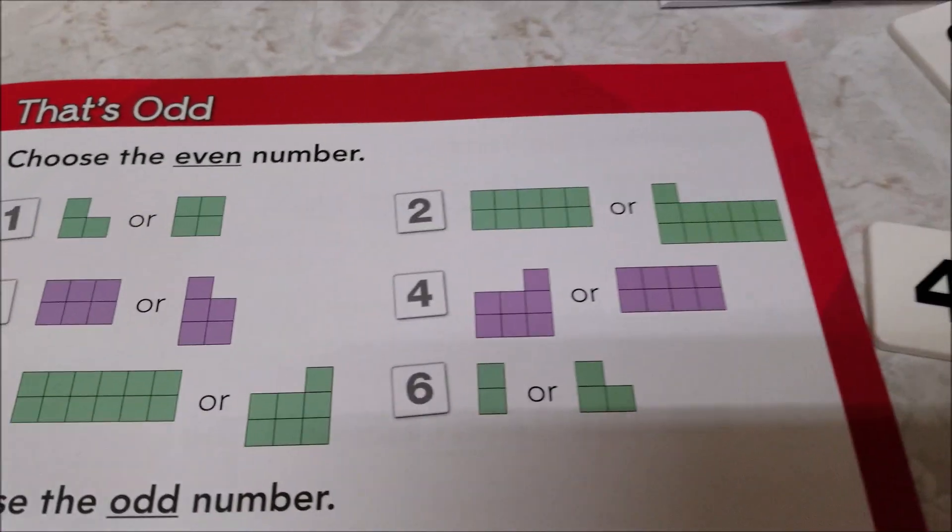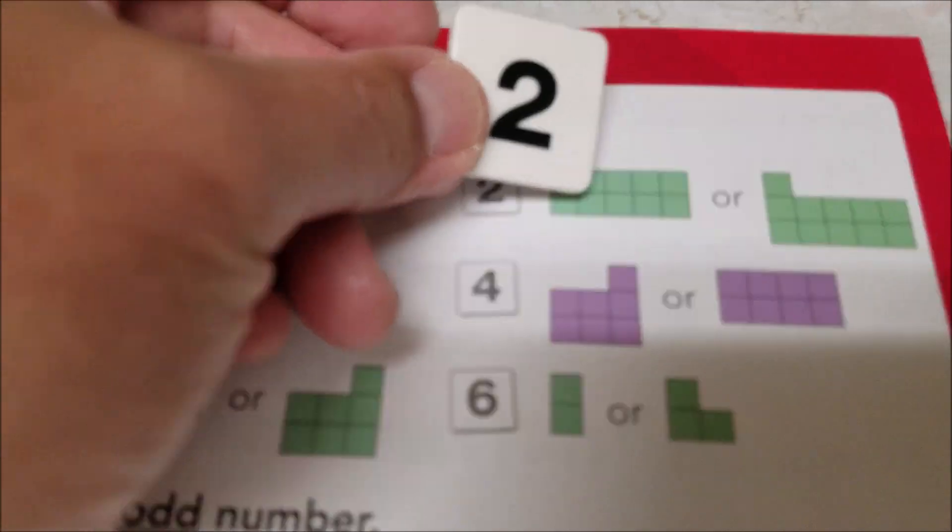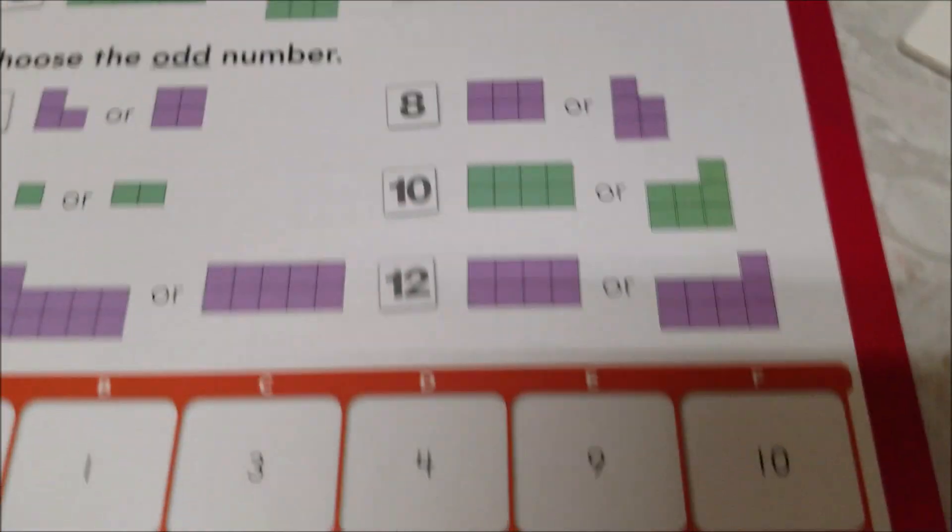Okay, we're going to grab the number two tile here. Two, four, six, eight, ten. So ten is going to be that even number, and ten is going to be F. So that's going to go right there.